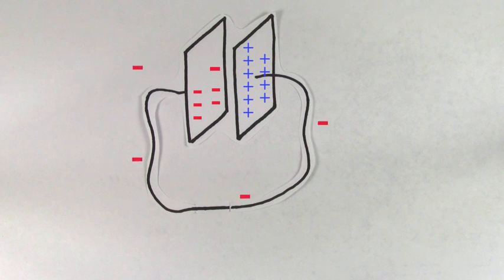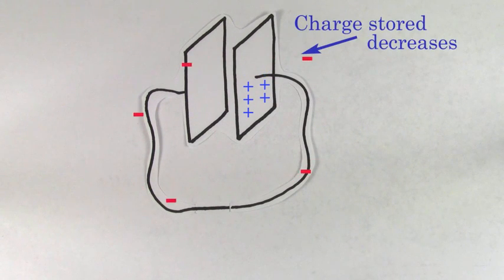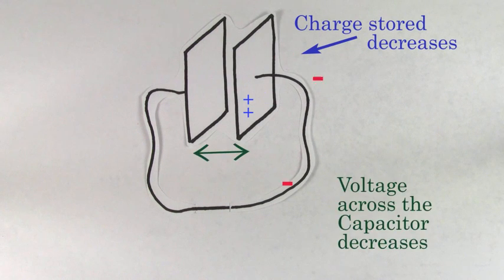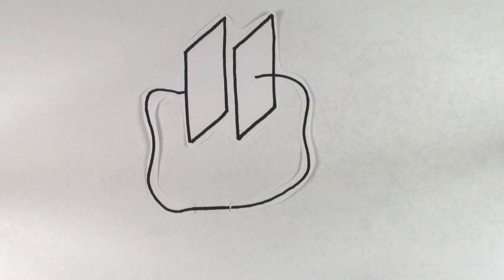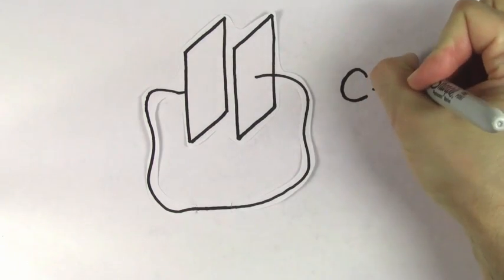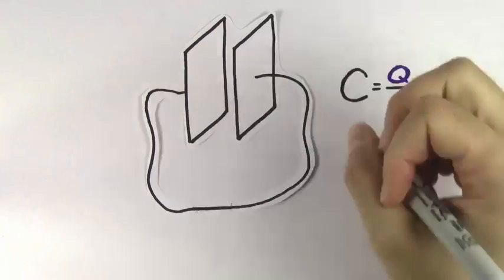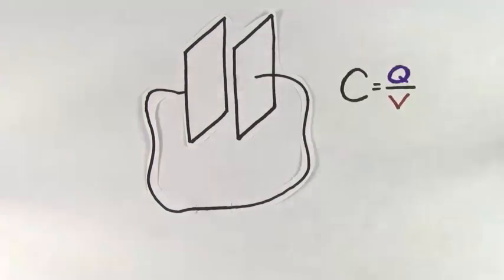The reason for this is that each time a charge gets transferred, it decreases the total amount of charge stored on the capacitor. And as the charge on the capacitor keeps decreasing, the voltage of the capacitor keeps decreasing. Remember that the capacitance is defined to be the charge stored on a capacitor divided by the voltage across that capacitor. So as the charge goes down, the voltage goes down.